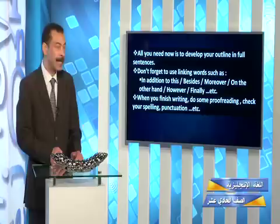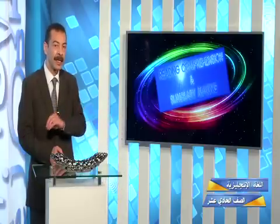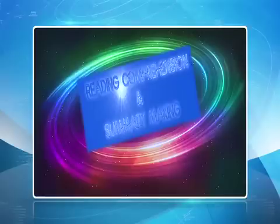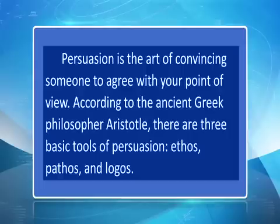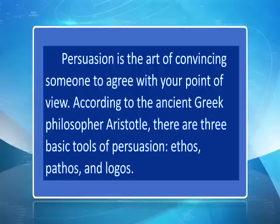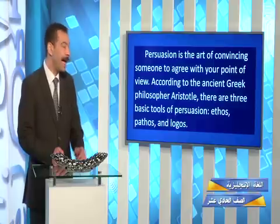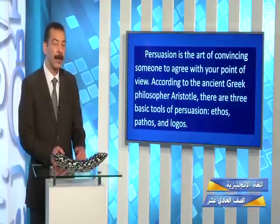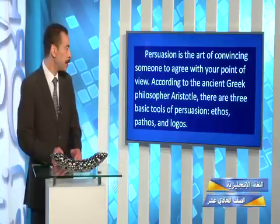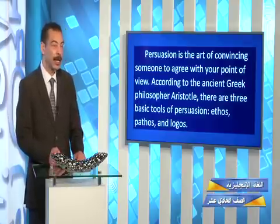Let's now move to reading comprehension, where you have a text along with some questions and summary making. The next section — translation — will also be related to the reading passage and another part from the general lessons. Our text begins with its first paragraph. Persuasion is the art of convincing someone to agree with your point of view. According to the ancient Greek philosopher Aristotle, there are three basic tools of persuasion: ethos, pathos, and logos. Remember, most of the time we are asked to give the title of the passage — try to remember where ideas occur in your reading passage.